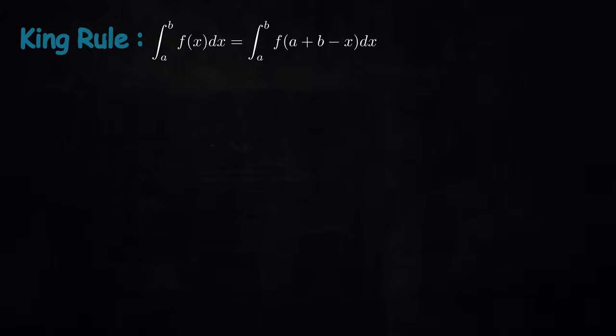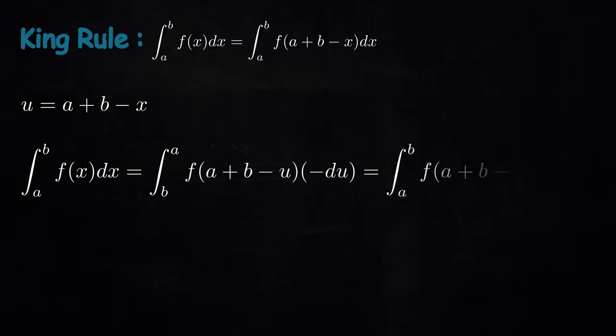It says that the integral of f over the limits a to b is same as the integral of f of a plus b minus x over the same limits. Now at this point, I know that some of you might be like, what's the big deal with that? Just go for a substitution taking u as a plus b minus x and the result immediately follows.